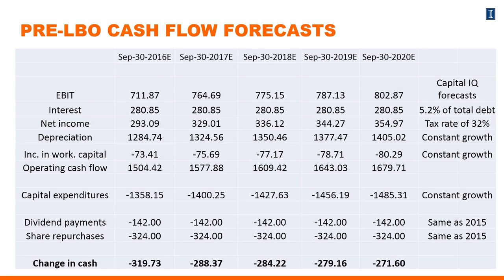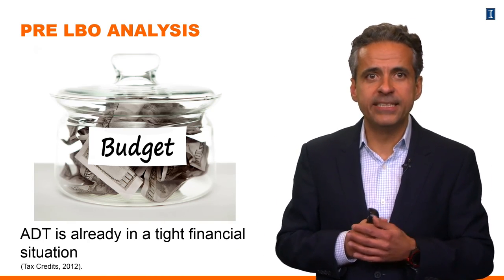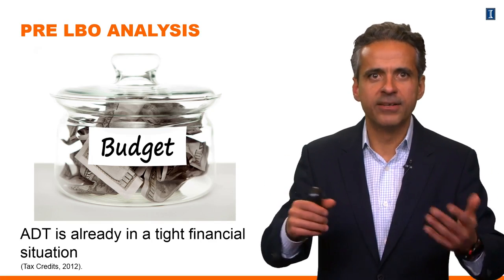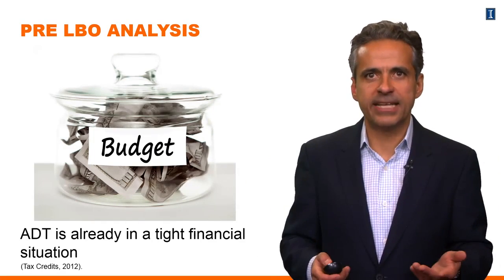Looking at the bottom line — as we did in Corporate Finance I — we can measure the change in cash. For the next five years, ADT does not seem to be generating enough cash to increase its cash holdings; in fact, it has negative changes in cash forecasted for all five years. The bottom line is that even prior to the LBO, ADT is already in a tight financial situation. This is a company that really doesn't have a lot of operational cash to spare and is already facing a tight budget.